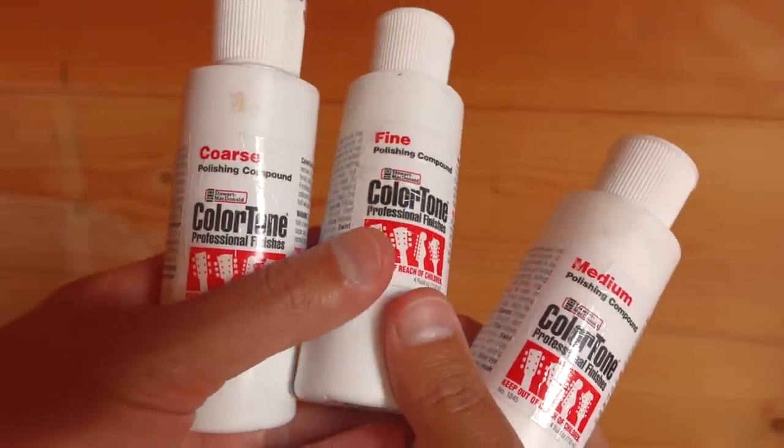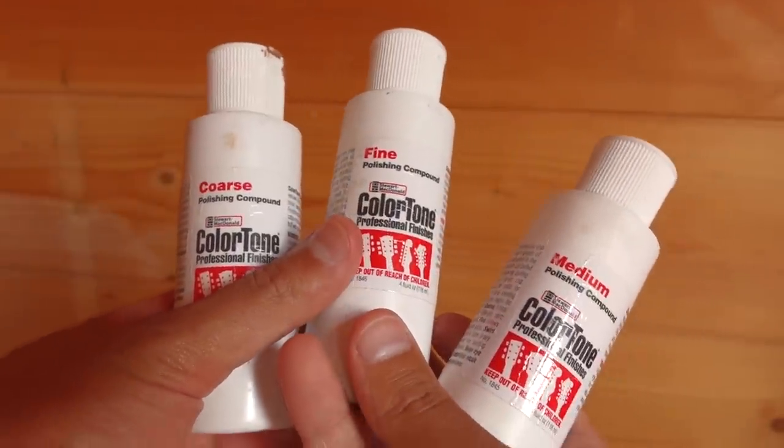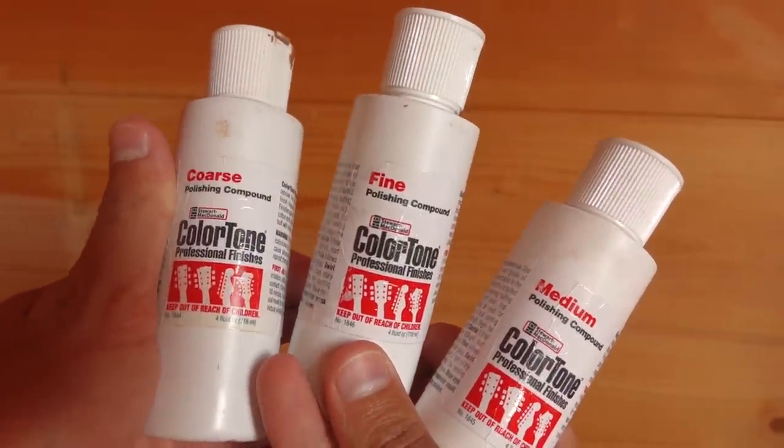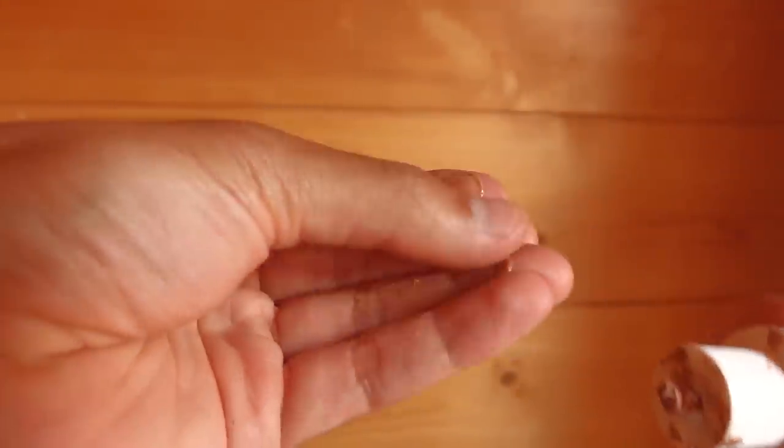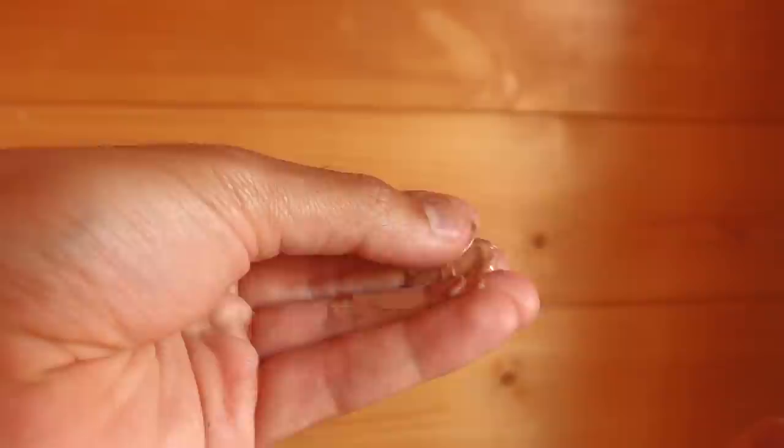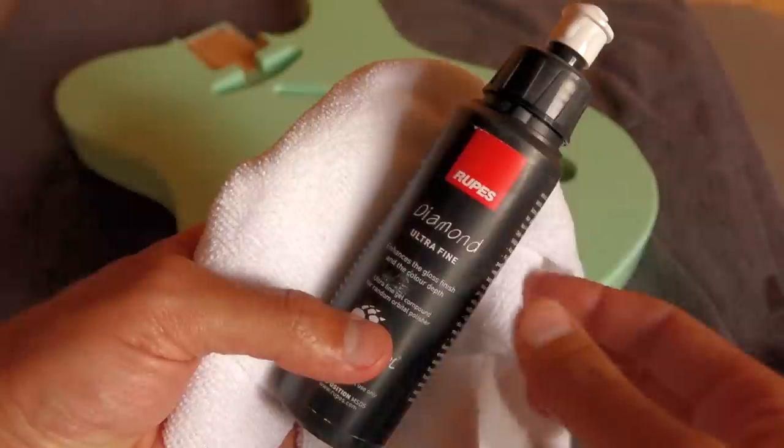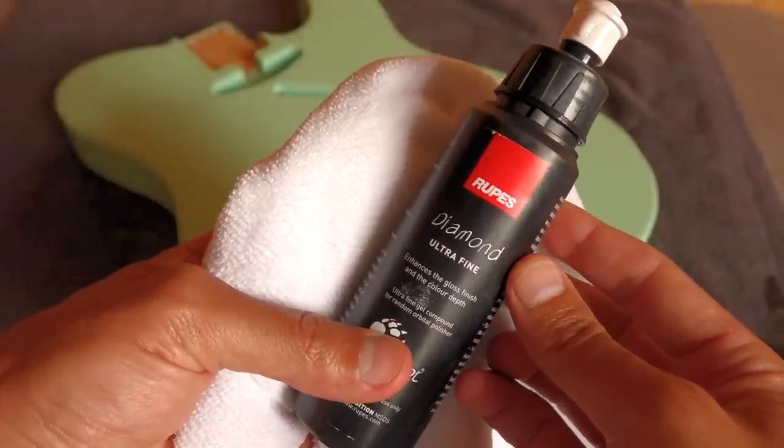Before we start let's take a quick look at polishing compounds. I like to see them as a liquid sandpaper and just like sandpaper it consists of millions of small particles that'll take away material just like sandpaper does. And just like with sandpaper there are very coarse and very fine polishing compounds. For example this is the coarse Stew-Mac polishing compound and when I rub it in between my fingers I can actually feel those particles in there. Of course a finer compound wouldn't allow you to feel those particles.